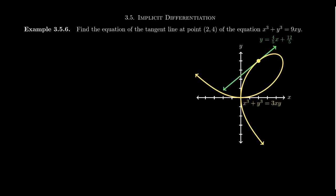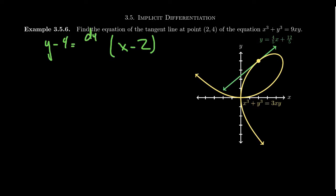The equation of the tangent line always has the same basic format: y minus the y-coordinate of a point on the line — in this case 4 — equals the slope times x minus the x-coordinate, which is 2. We know the x and y coordinates, but we don't know the slope. The slope of the line is going to be the derivative — what we're looking for is dy over dx at the point (2, 4). That's where calculus comes into play.